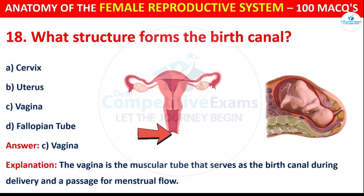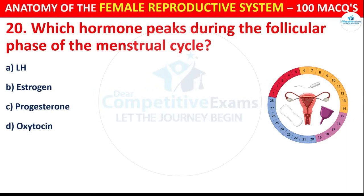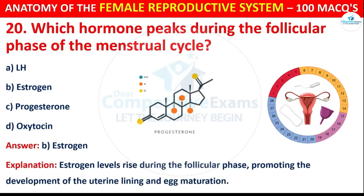Question number 19: Which hormone peaks during the follicular phase of the menstrual cycle? Options are: LH, Estrogen, Progesterone, or Oxytocin. The correct answer is B, i.e. Estrogen. Estrogen levels rise during the follicular phase, promoting the development of the uterine lining and egg maturation.